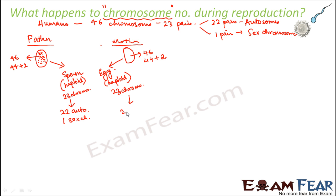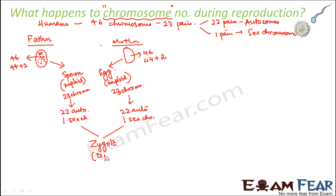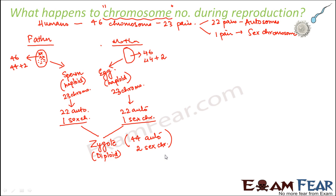The egg similarly consists of 22 autosomes and one sex chromosome. The sperm and egg combine during fertilization to form a zygote. The zygote is diploid: the 22 autosomes from the sperm combine with the 22 autosomes from the egg to give 44 autosomes, and the two sex chromosomes combine to give 2 sex chromosomes — so the zygote again has 46 chromosomes total. This zygote then divides and forms other parts of the body.